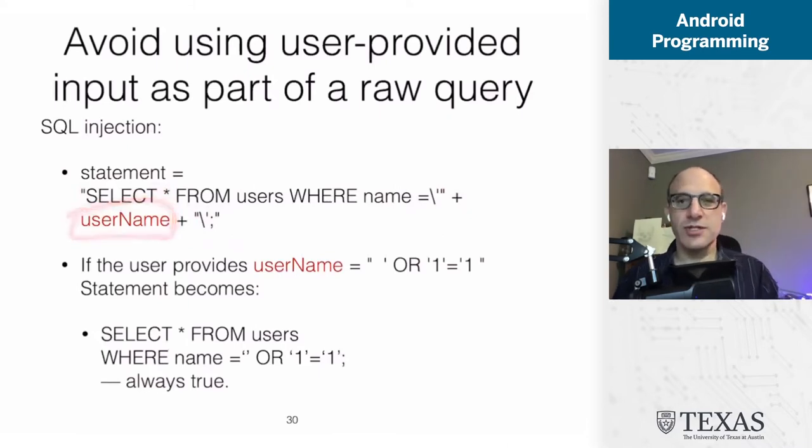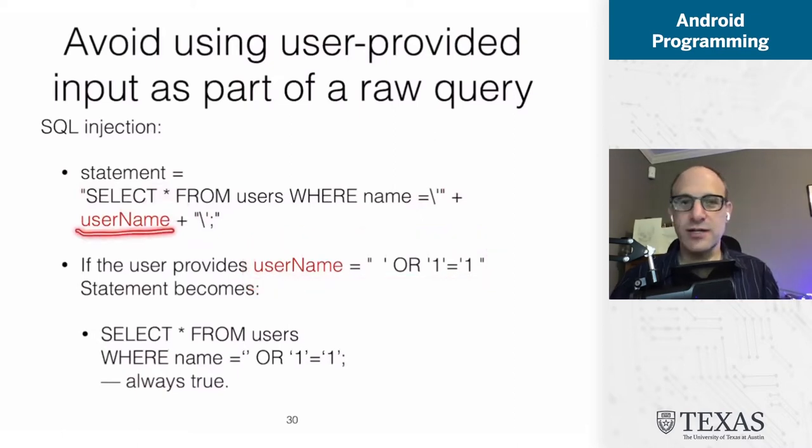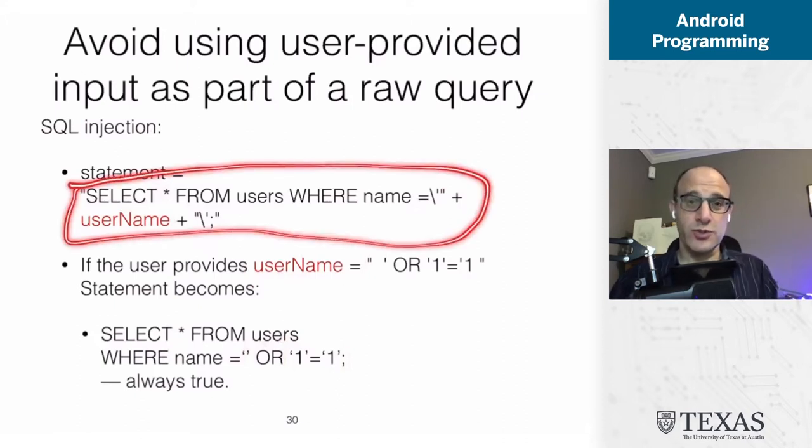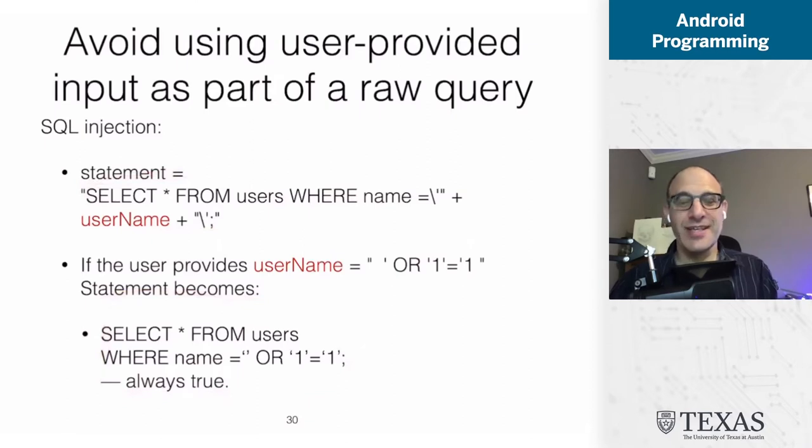However, once people started using databases in applications that had multiple users across the Internet, you have to worry about malicious actors. And if you know what's going on in a database, you can provide a user name that when plugged into this string does some bad things. So it contains some SQL code that when executed in this case, select star from users where name equals an empty name or one equals one. So the point of this select statement is to get you your user record. The way we fake it out is by giving a funny name for our user name, we get everybody's record. This is a SQLite injection attack, and this is very bad.